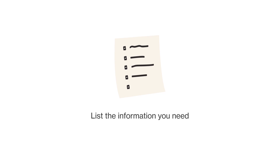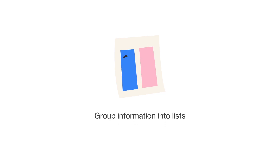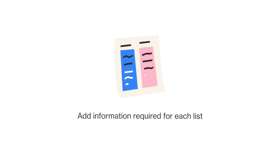We'll cover turning your mapping into tables and fields in the next video. Now your turn: to understand the distinct lists you need to get things done, list out the information across the different steps, organize similar information into lists, name those lists, and reorganize the detailed information into each list.